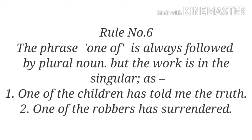Rule number six: the phrase 'one of' is always followed by a plural noun, but the verb is in the singular. The noun or pronoun used after 'one of' is always in the plural form, as we are talking of one person, place or thing out of many. Example one: 'One of the children has told me the truth' — one child out of many children. Example two: 'One of the robbers has surrendered' — one out of many robbers. So after 'one of', the plural nouns 'children' and 'robbers' are used.